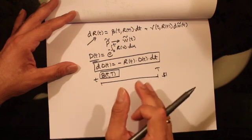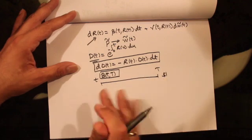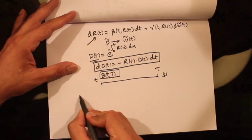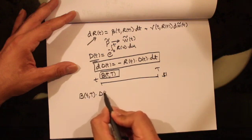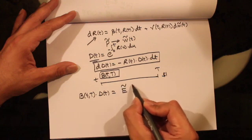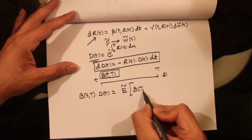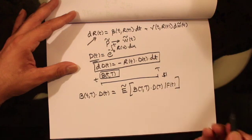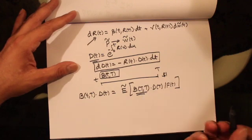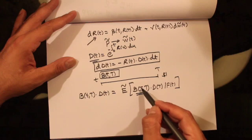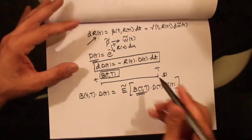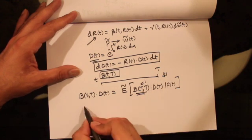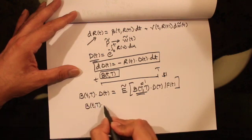We want to figure out the price of this zero coupon bond today using the risk neutral pricing formula. Under the risk neutral measure, the discounted value of all assets is a martingale. So we write B(t,T)·D(t) equals the expected value under the risk neutral measure of B(T,T)·D(T) given information at time t. B(T,T) is the value of the zero coupon bond at maturity, which equals the face value of one dollar.